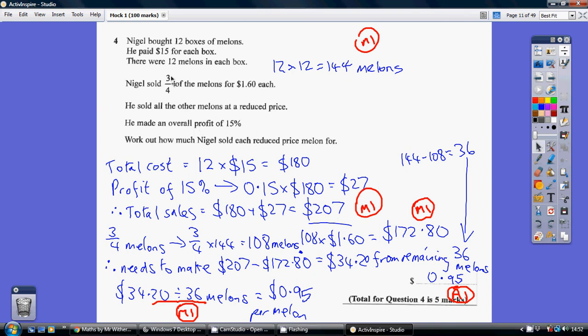Now we know that we sold three quarters of them for $1.60 each. So how much money did this generate? Well, three quarters of the melons is three quarters of the 144 melons, which is 108 melons. And we're selling those at $1.60 each. So that's $172.80 that those three quarters of the melons, the 108 melons, have generated.